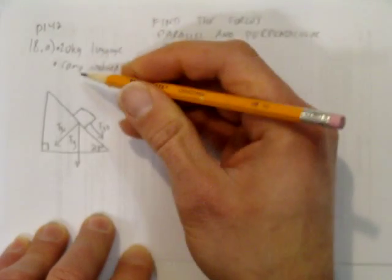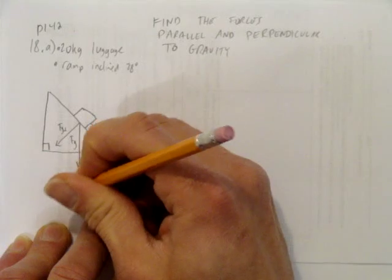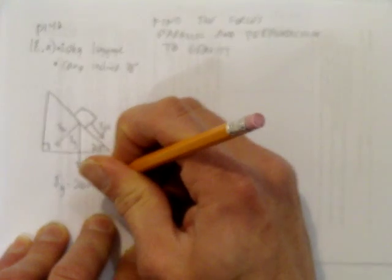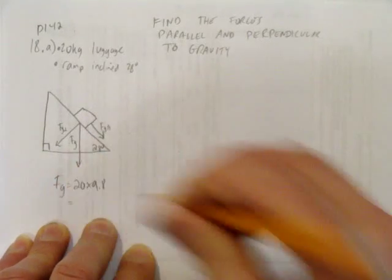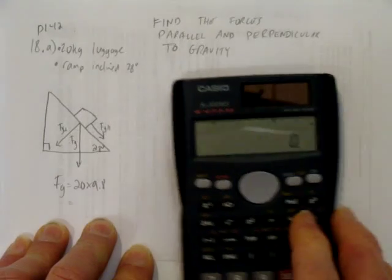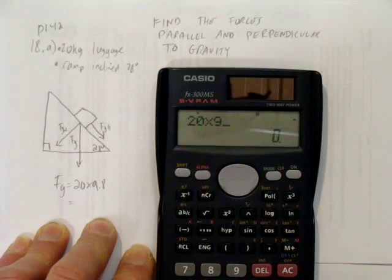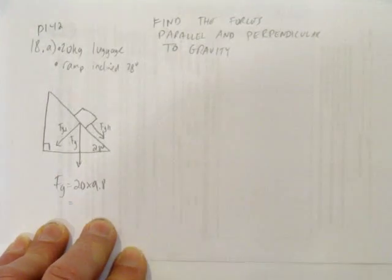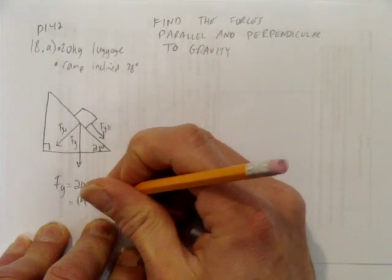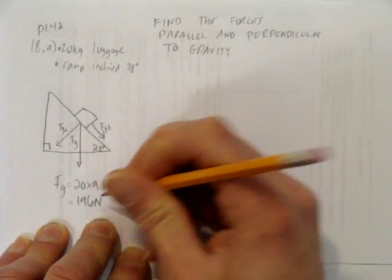And since it's a 20 kilogram piece of luggage, we know the force of gravity is just 20 times 9.8, which is the effect from gravity on Earth. 20 times 9.8 is 196, so there's a force of gravity of 196 newtons.